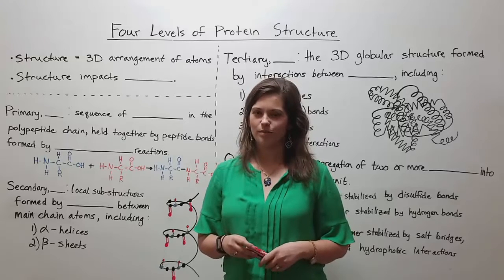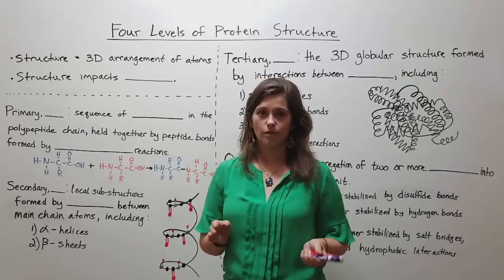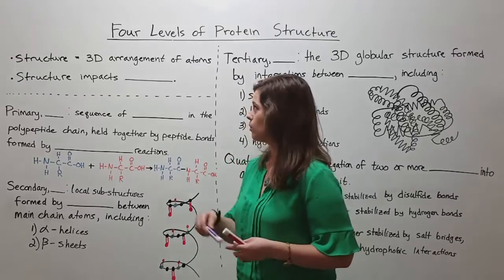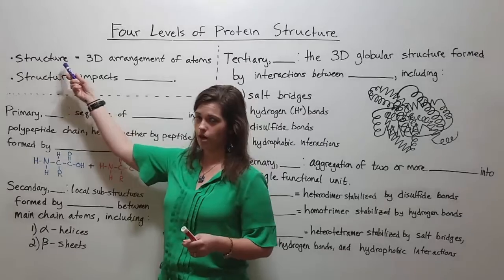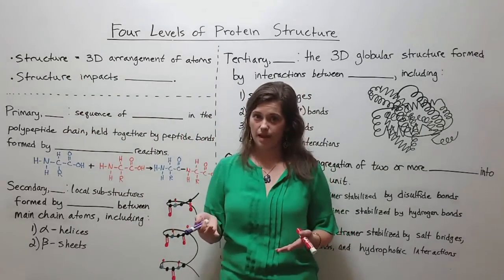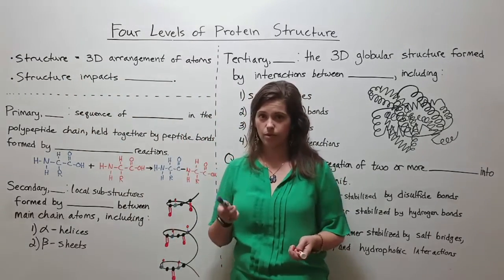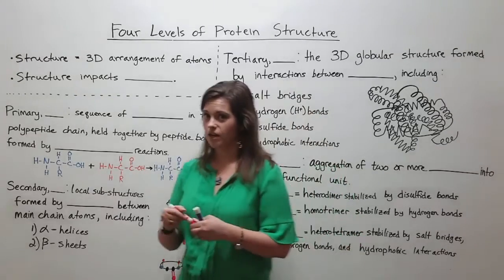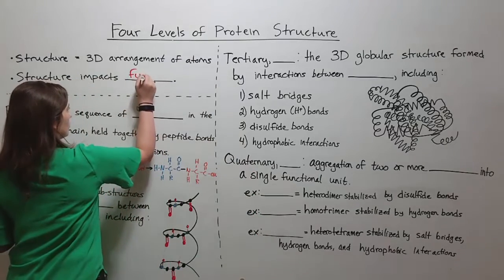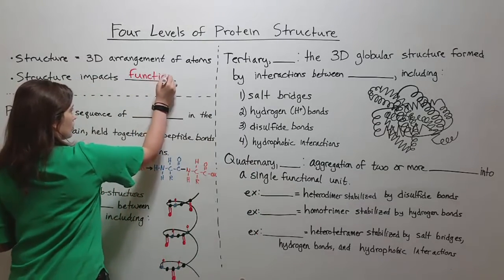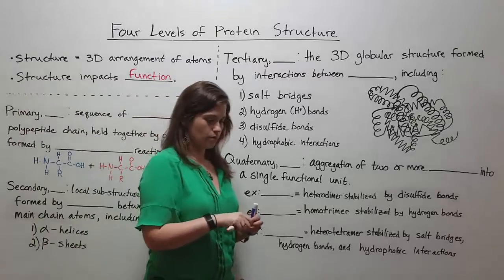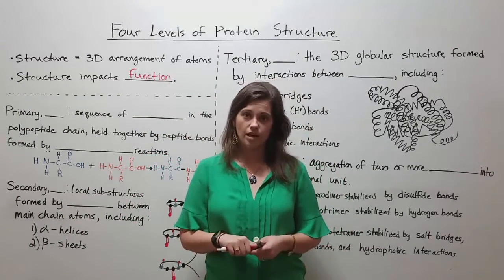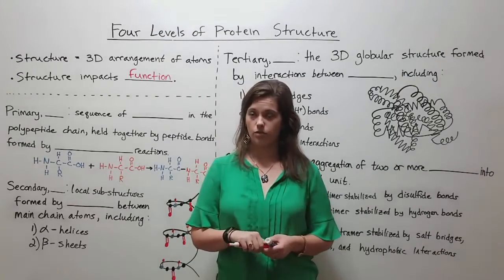Hi everyone and welcome to Biology Professor. Today we're going to talk about the four levels of protein structure. When we talk about structure, we're usually talking about the 3D arrangement of atoms in space. The reason that we care about protein structure is because structure impacts function. This means that if a protein does not have the correct structure, perhaps because of a mutation, then it's unlikely to be able to function correctly.